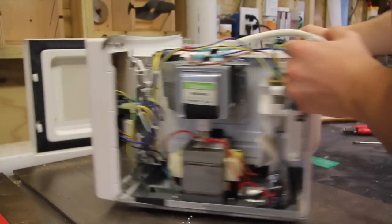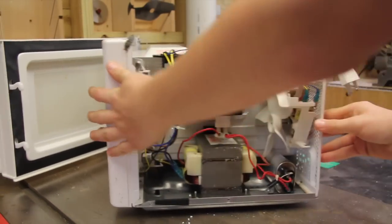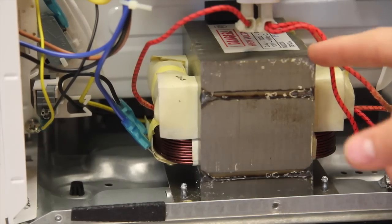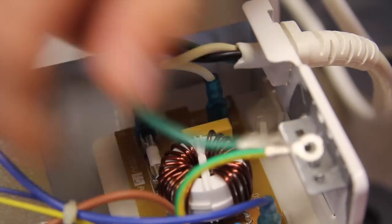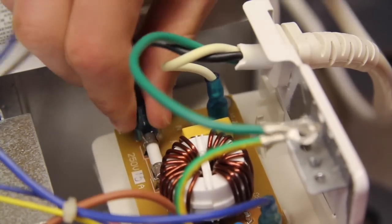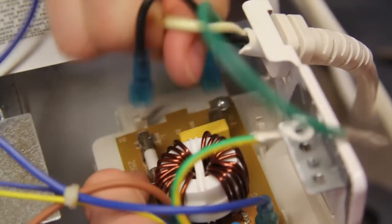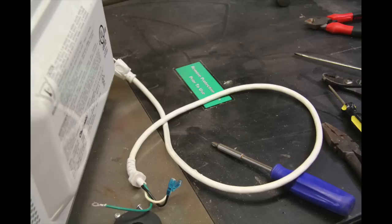Now we can get started on these electronics. This transformer is what we really want. I just unscrewed this contact port, and now I can pull out these connections right here and remove the power cord.